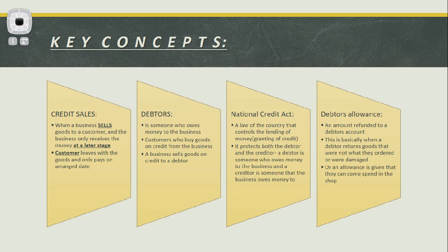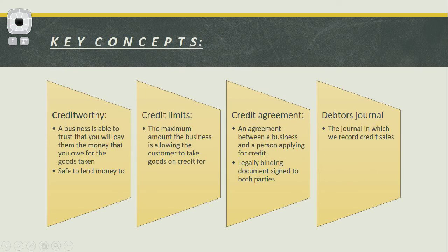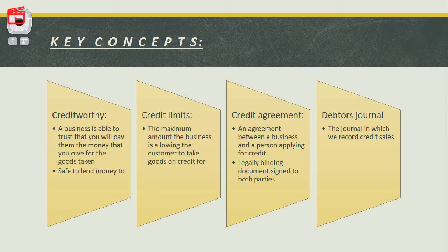Creditworthy — a debtor is creditworthy when the business is able to trust that you will pay them the money you owe for the goods taken. If you are creditworthy, the business does reference checks: they check your bank statements and your previous credit records to determine whether you are going to be able to pay them back, and that you are safe to lend money to.